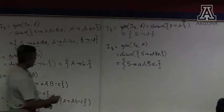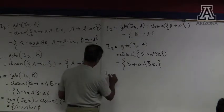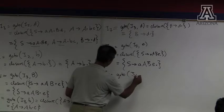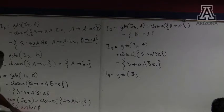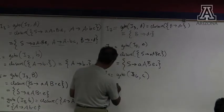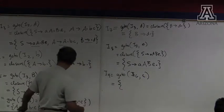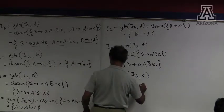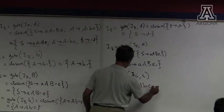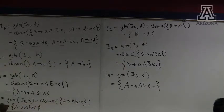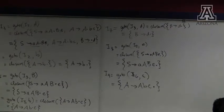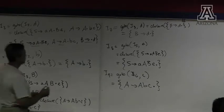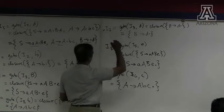On I6, I get a transition: A goes to A, B, C dot. That's the only transition out of I6. For I7, the dot's all the way at the end so there are no transitions. What about I8 and I9? So we have 10 states in our parser.